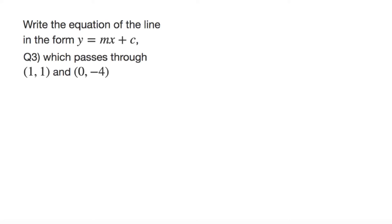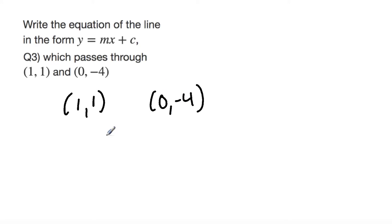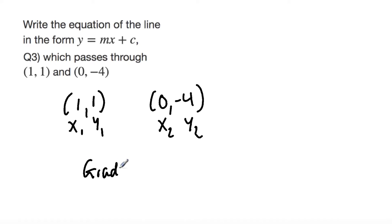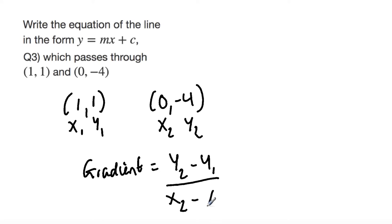Question 3: write the equation of the line in the form y equals mx plus c which passes through (1, 1) and (0, -4). I'm going to label each of these coordinates x1, y1, x2, y2. So x1 is 1, y1 is 1, x2 is 0, and y2 is -4. To calculate the gradient I'm going to be using the equation: gradient is equal to y2 minus y1 over x2 minus x1.